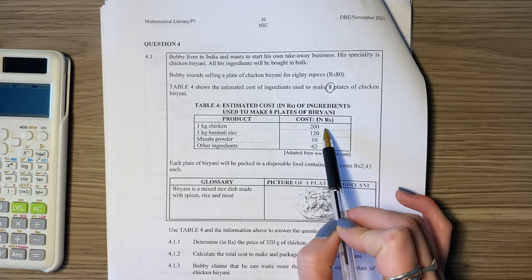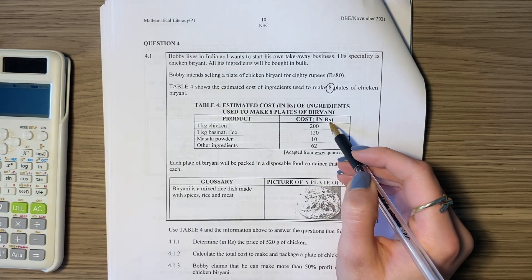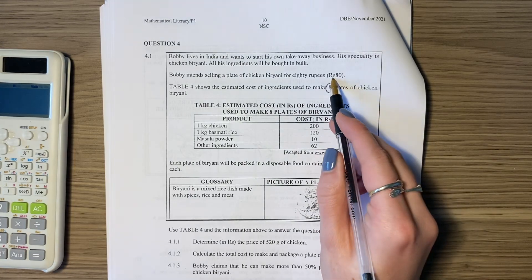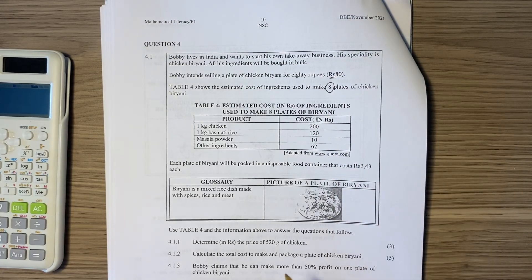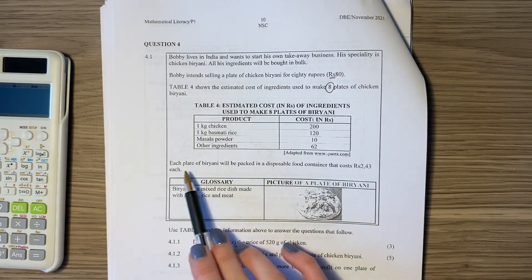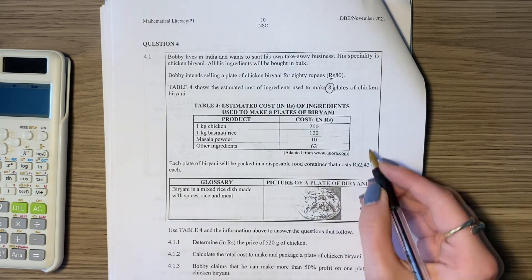This is how much it's going to cost. This is the cost in RS. Be careful, some students think this is RANS, not RANS, RS. Remember, look over there. They literally told you how they're going to represent rupees. Make sure that you're following through. Then it says each plate of bryani will be packed in a disposable food container that costs this much.